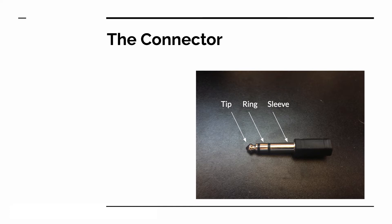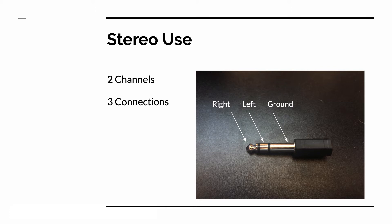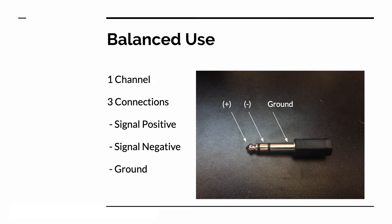When we look at this for stereo use, this sends two channels and a ground — a left, a right, and a ground. Three different connection points: one carries the left signal, one carries the right signal, one carries the ground. When we're using it for a balanced connection, it's only carrying one channel's audio but using all three connections. One carries the positive signal, one carries the negative signal — which is exactly the same as the positive but inverted — and then the ground. So three connections, but one channel.